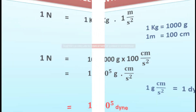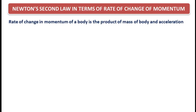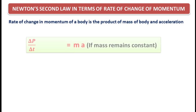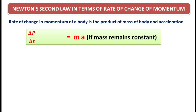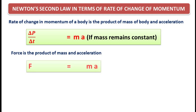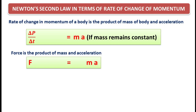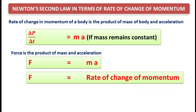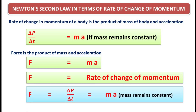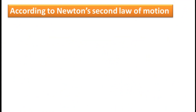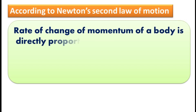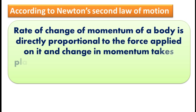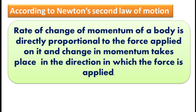Now Newton's second law of motion in terms of rate of change of momentum. We know rate of change of momentum is the product of mass and acceleration: ΔP divided by ΔT equals MA, if mass remains constant. And force is the product of mass and acceleration: F equals MA. Comparing both equations, we get force equals rate of change of momentum — F equals ΔP divided by ΔT, which equals MA if mass remains constant. According to Newton's second law, the rate of change of momentum of a body is directly proportional to the force applied, and the change in momentum takes place in the direction in which the force is applied.